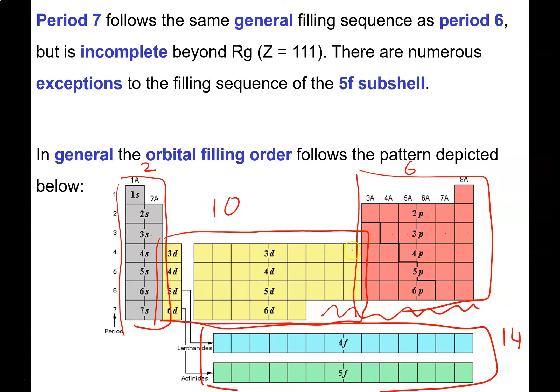Then 3D1 all the way through to 3D10, then 4P1 all the way through to 4P6. Then 5S1, 5S2, 4D1 all the way through to 4D10, then 5P1 to 5P6. Then 6S1, 6S2, 5D1, and then we come down here to 4F1 all the way through to 4F14, and then back up finishing off the 5D to 5D10, finishing here with 6P1 and so forth.